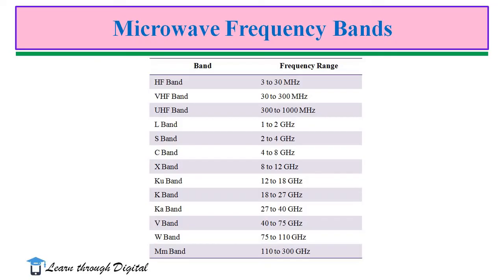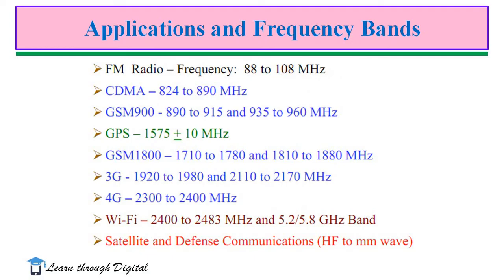The microwave frequency bands are designated as L-band, S-band, C-band, X-band, Q-band, K-band, V-band, W-band, and M-band. These are the various frequency ranges under microwave frequency bands. I have listed some frequency bands and their applications — mostly those used in our day-to-day life, such as mobile phones and Wi-Fi.